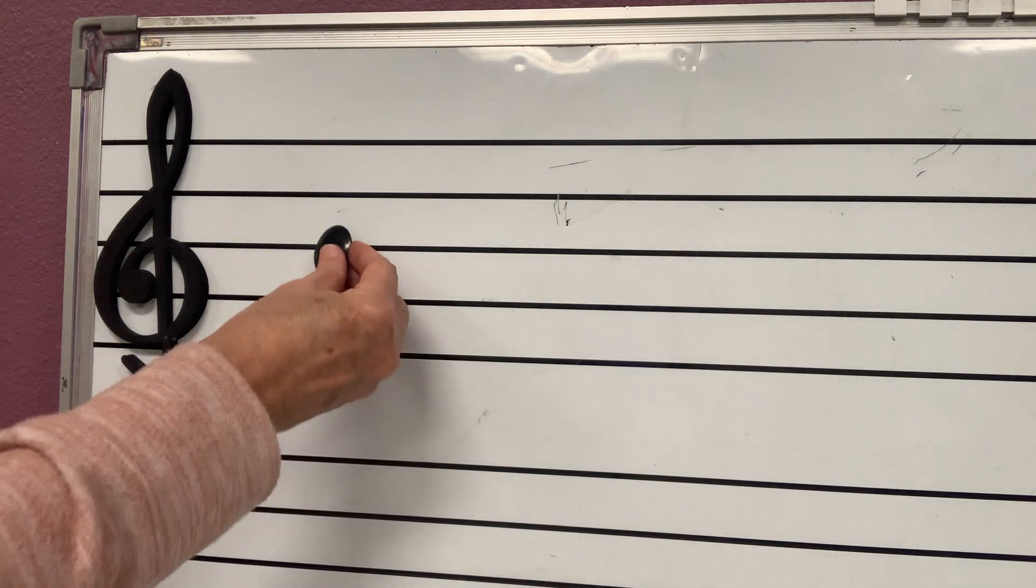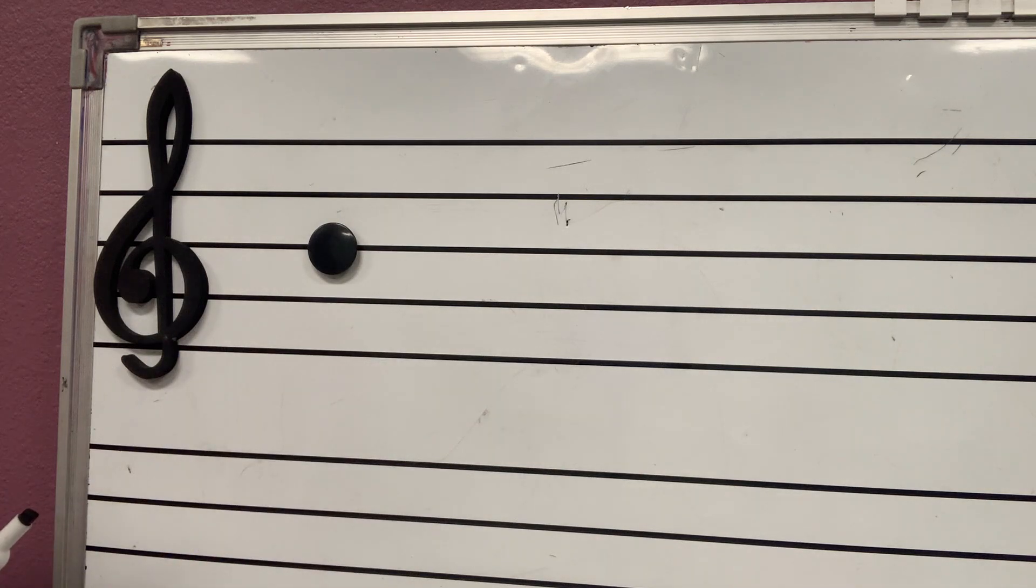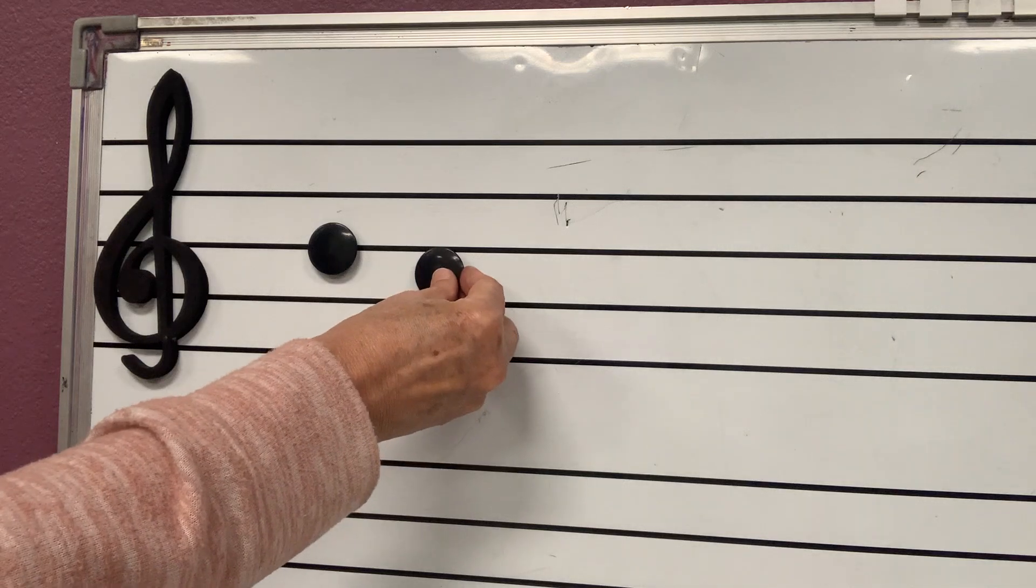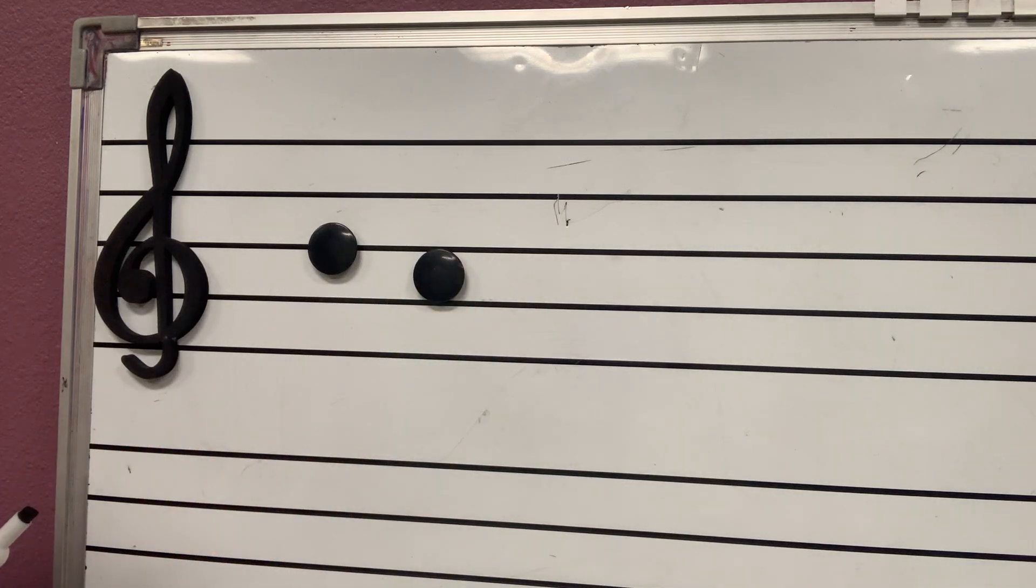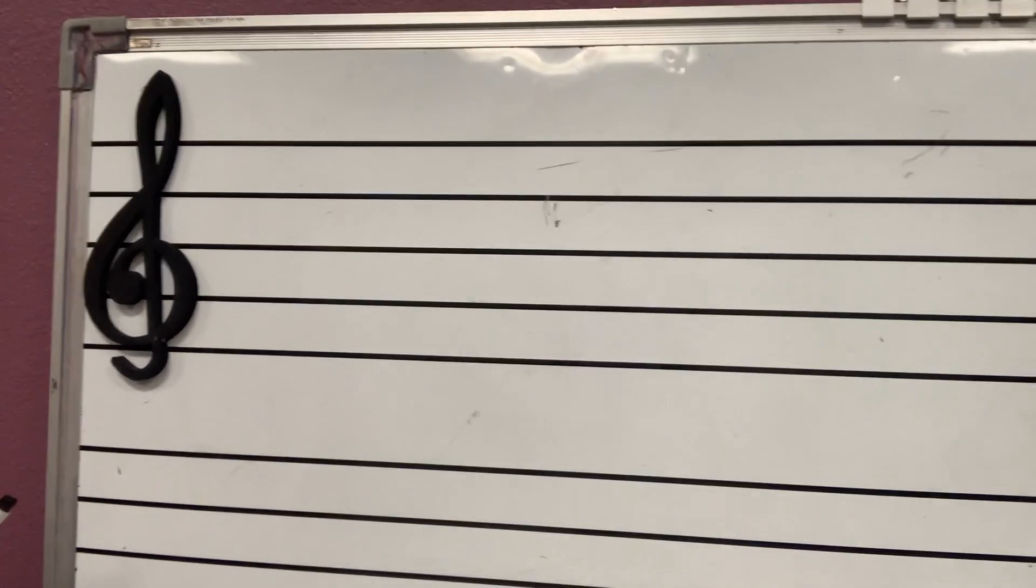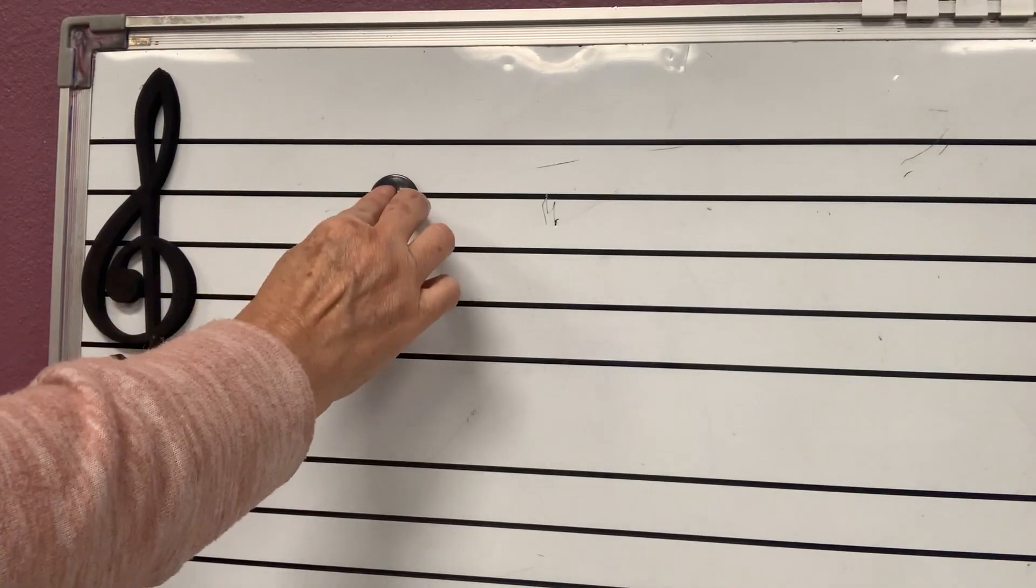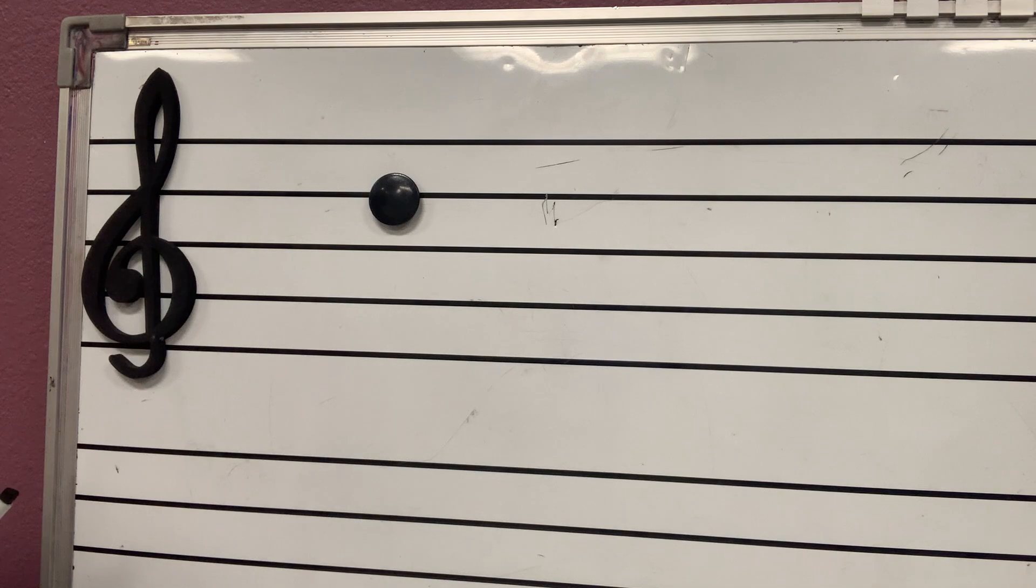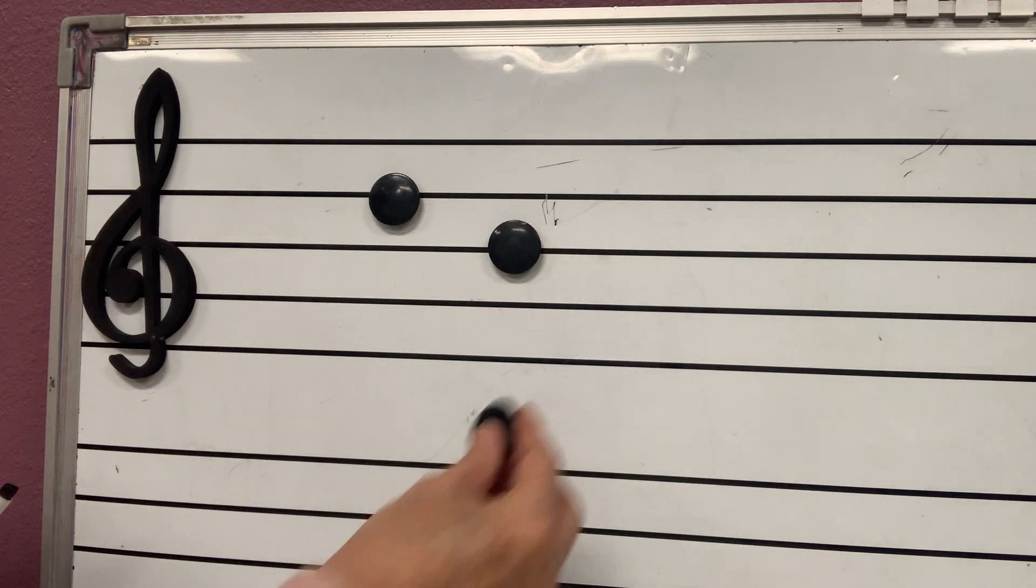If they step on the lines, I'm going to use magnets. We call them line notes. If there are only space between two lines, we call them space notes. So first, let's make sure you know the difference between lines and space. Do you think this is line or space? Line. How about this one? Line.